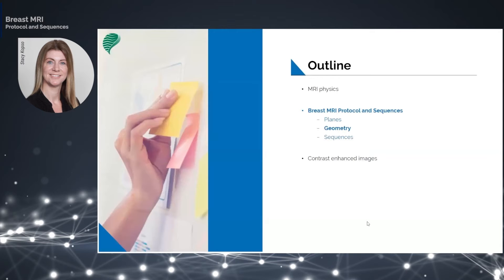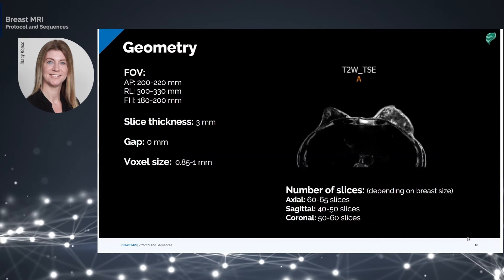The geometry applied in breast scanning protocol is as follows. The field of view in the anterior-posterior direction varies from 200 to 220 millimeters. In the right-left direction, it varies from 300 to 330 millimeters.